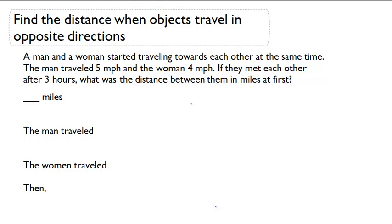We can think about this problem like this. Picture that the man starts here at this point. The woman starts over here at this point and we know that they are traveling towards each other. So the woman is headed in that direction and the man is headed in that direction.